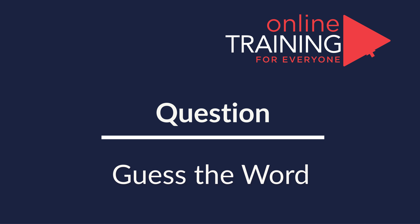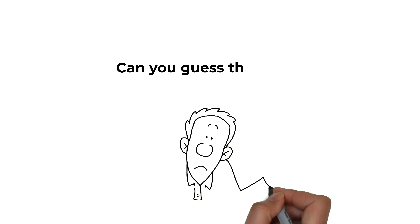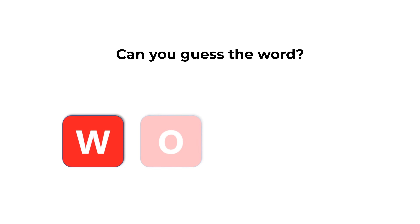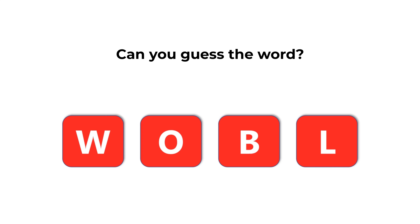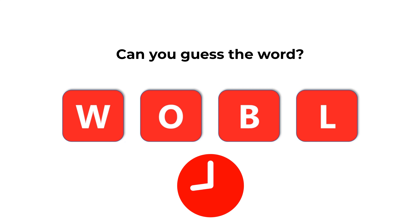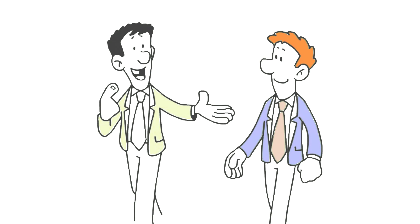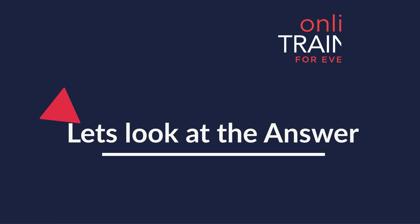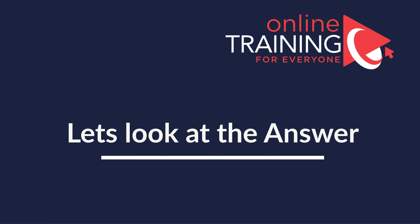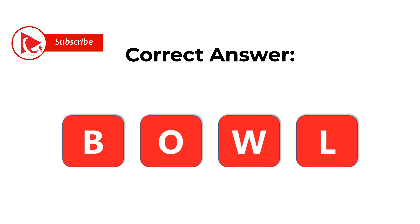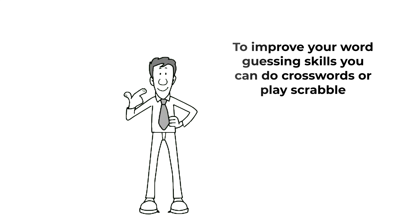Here's the cool question that you frequently get in a test. You're presented with 4 different letters, and you need to guess the word using all letters presented. The letters we have are W, O, B, and L. Can you guess the word? Give yourself 10 to 15 seconds to see if you can come up with the answer. The correct answer here is BOWL, spelled as B-O-W-L. Hopefully you've nailed this question and now know how to answer similar problems on the test.